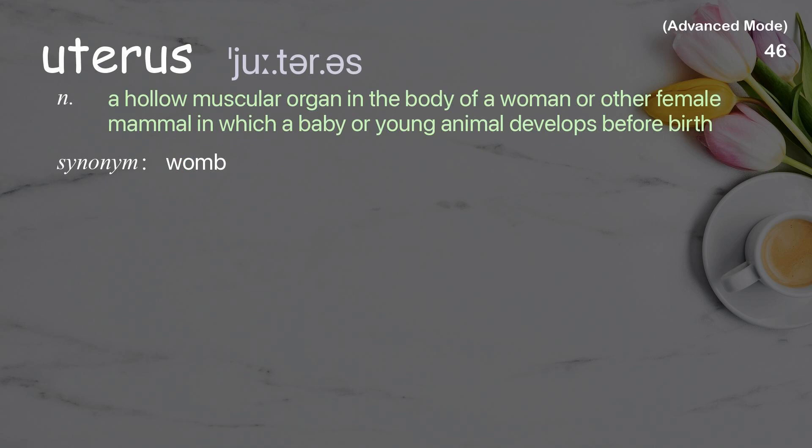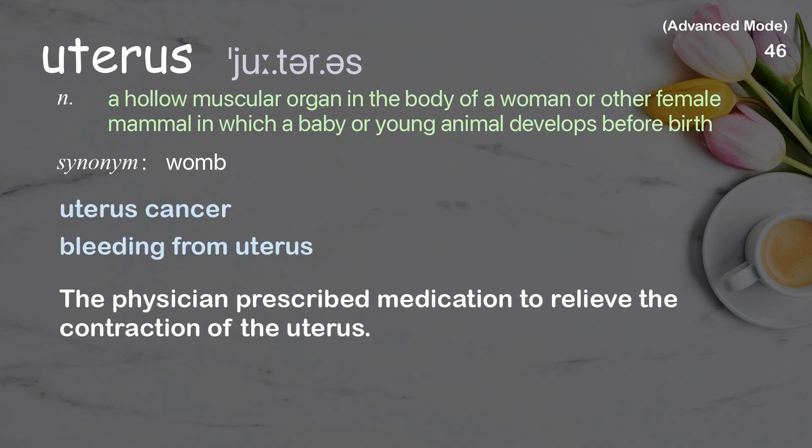Uterus: a hollow muscular organ in the body of a woman or other female mammal in which a baby or young animal develops before birth. Examples: uterus cancer, bleeding from uterus. The physician prescribed medication to relieve the contraction of the uterus.